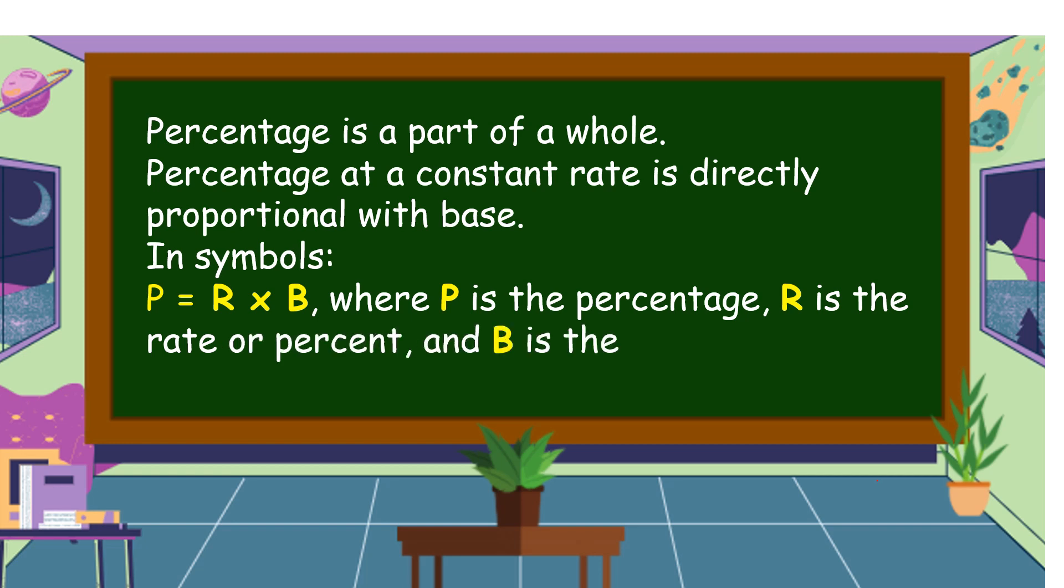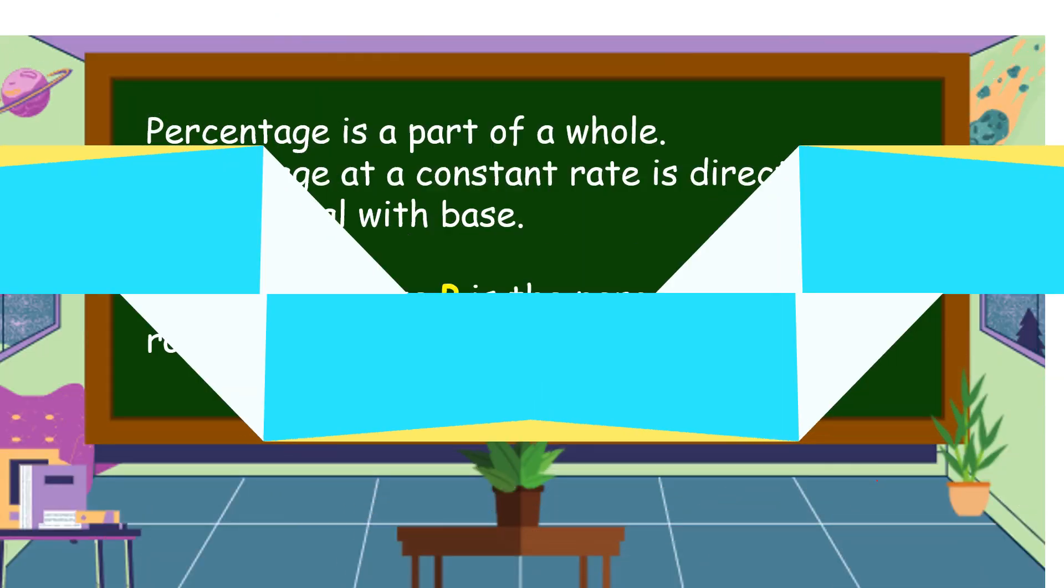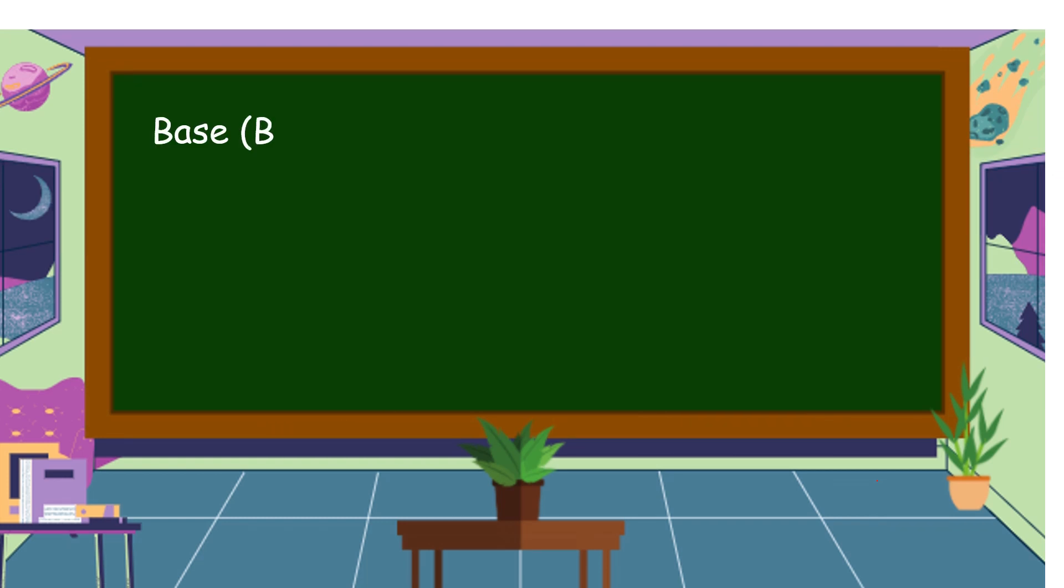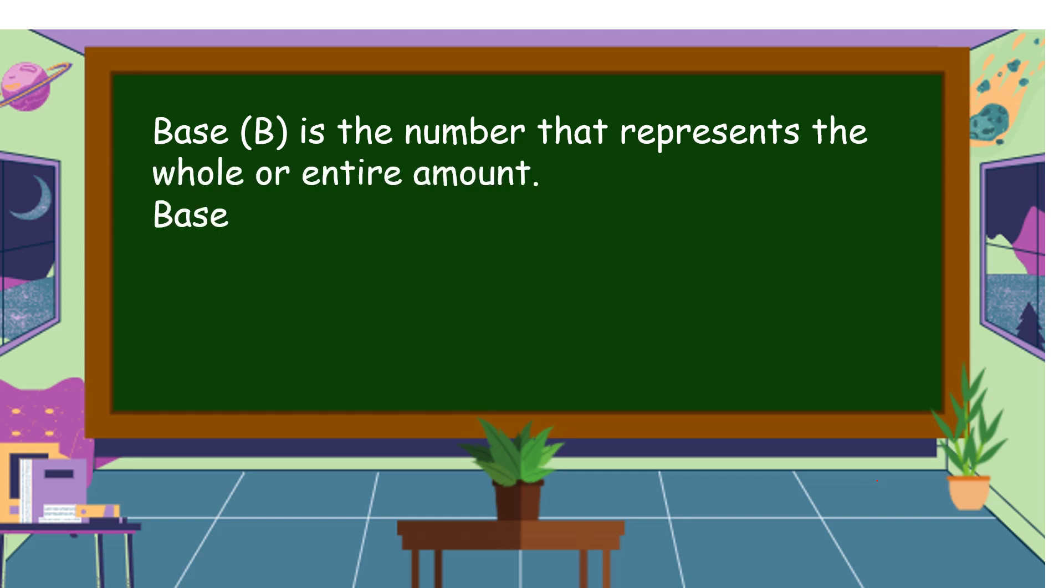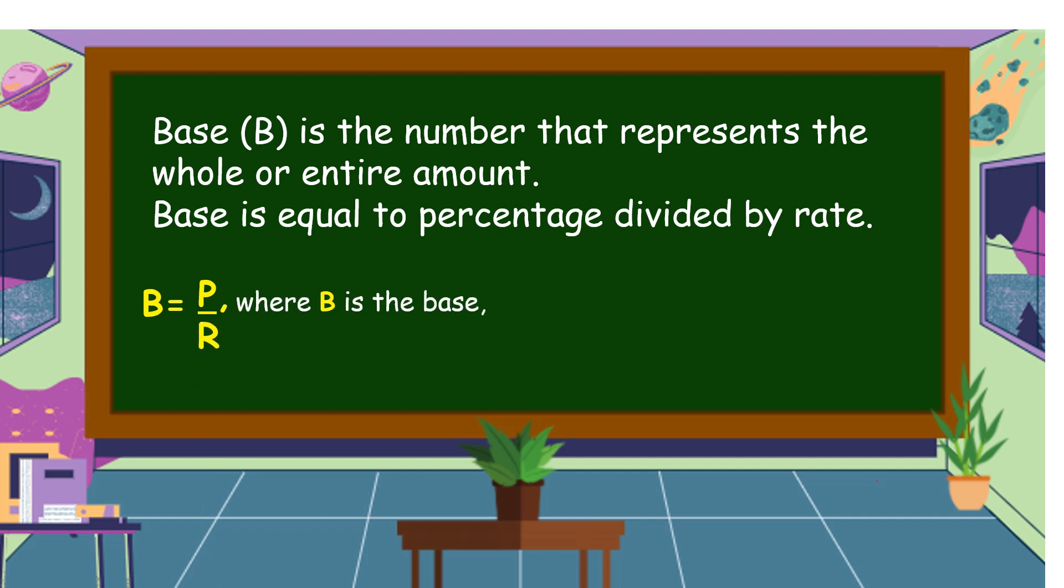On the other hand, base is the number that represents the whole or entire amount. Base is equal to percentage divided by rate: B equals P over R, where B is the base, P is the percentage, and R is the rate or percent.